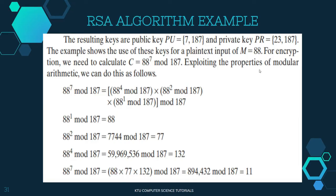We will now encrypt using the plain text. M is equal to 88. The encryption equation is C equals m raised to e mod n, that is 88 raised to 7 mod 187. We simplify using modular exponentiation by breaking into smaller powers: 88 raised to 4, 88 raised to 2, and 88 raised to 1, since 4 plus 2 plus 1 equals 7.